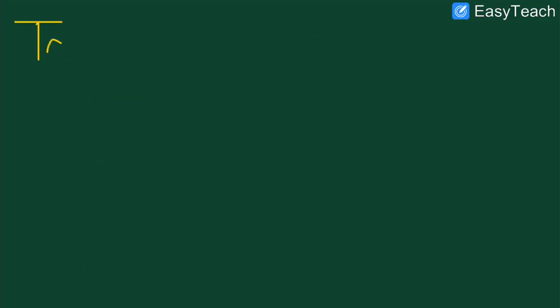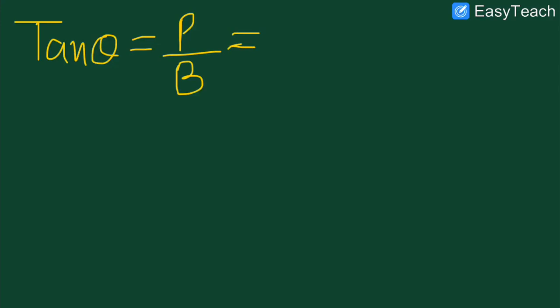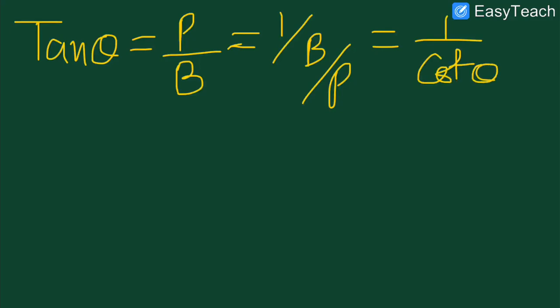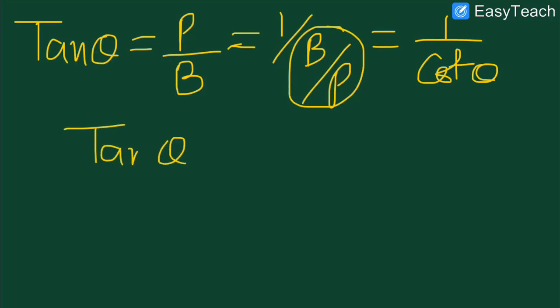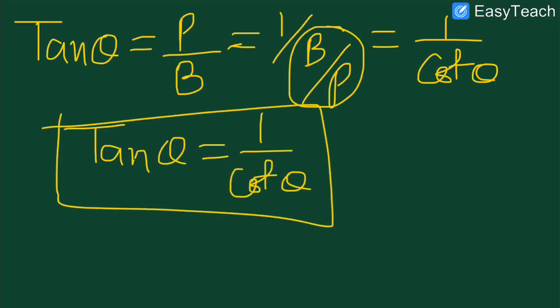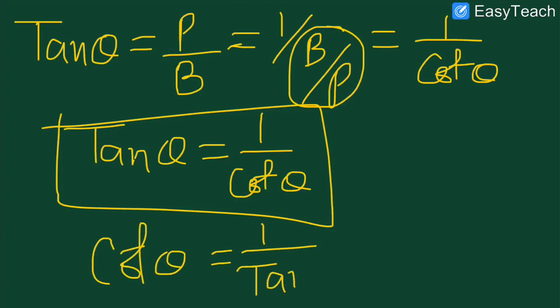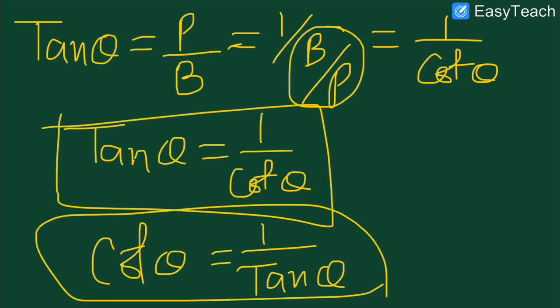Ab tan theta aur cot theta ke beech relation derive karte hain. Tan theta = perpendicular divided by base. We can write this as 1 by base/perpendicular, which is 1 by cot theta, because cot theta = base by perpendicular. So tan theta = 1/cot theta, and cot theta = 1/tan theta. Yeh hai reciprocal relation between tan and cot.